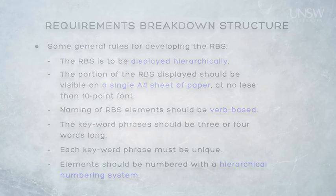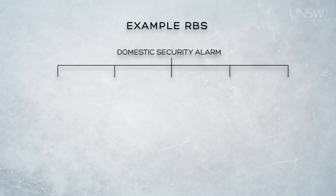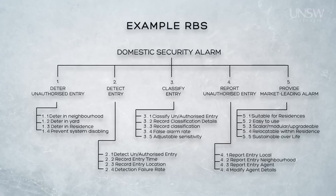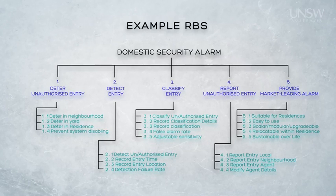Here's an example of an RBS, in this case for a domestic security alarm as part of a house. Looking across the five elements at the first level, we can see the major functions of the alarm: to deter, to detect, to classify, to report, and to provide a market-leading alarm. At the next level, the RBS shows the functions that combine to form each parent function at the level above. The RBS is a powerful tool to illustrate the functionality to be provided by the system.